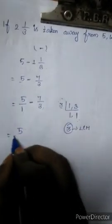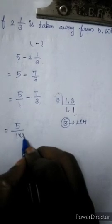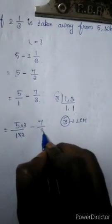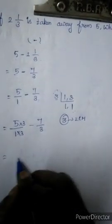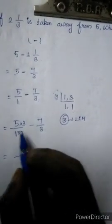We have to change this. 1. What number we have to multiply from this? 3. The same number should be multiplied here also. Minus 7 by 3. Here we can write 3 in common.